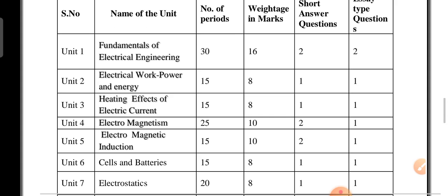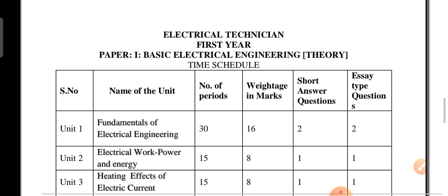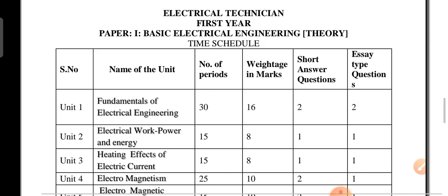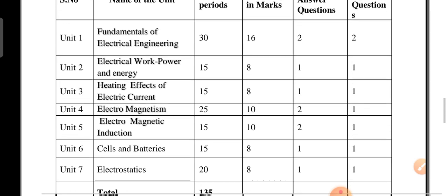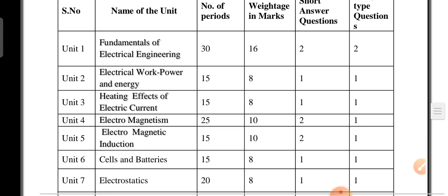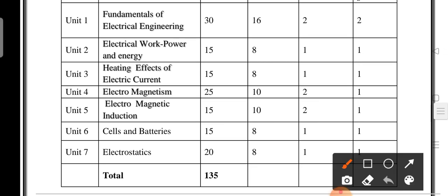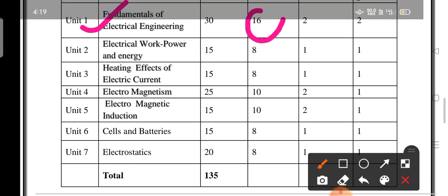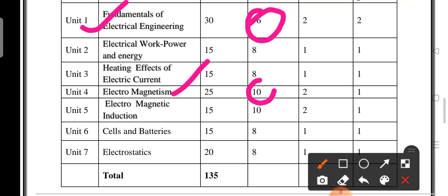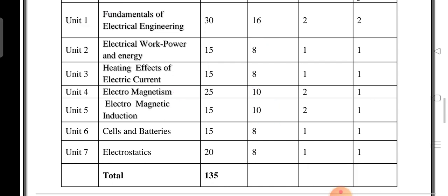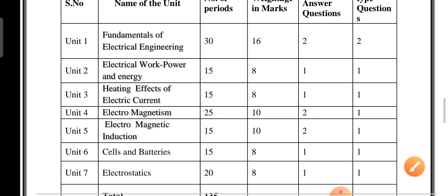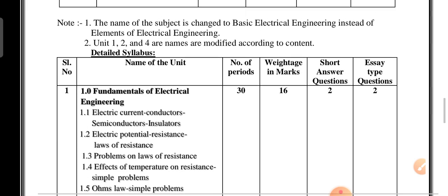So let's look at the syllabus and deleted contents. For Paper 1, Basic Electrical Engineering, for Telangana state electrical technician first year students, Paper 1 has seven units. Unit 1 carries 16 marks weightage, Unit 4 carries 10 marks, and Unit 5 carries 10 marks. If we are thorough with at least three units, we will definitely pass. Unit 1 has 16 marks and has important questions.